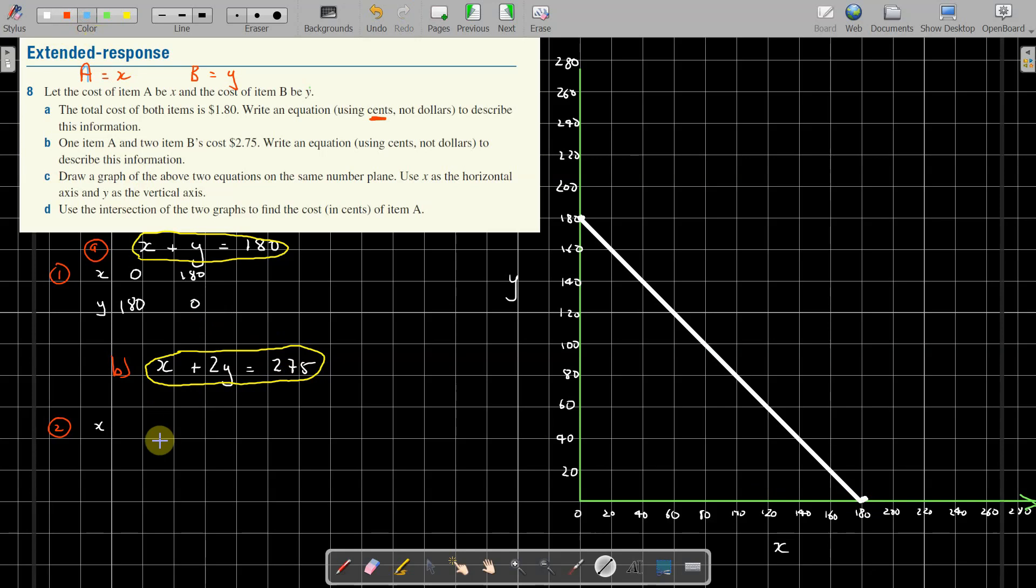Okay, the other one: X plus 2Y equals 275. Okay, let's get back to here. If X is zero, then Y is going to be 275. Where is that? X is zero, Y is 275 up here, so that'd be almost up to there.